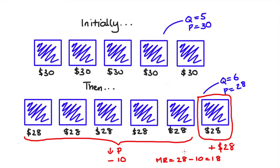That's at the heart of why we say MR is less than P for firms with market power. Firms with market power have to deal with the demand curve, which tells them that if they increase their Q they have to drop their prices — and not just for the next unit, but for all the units that came before it.